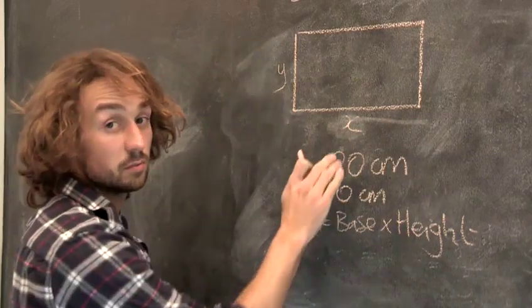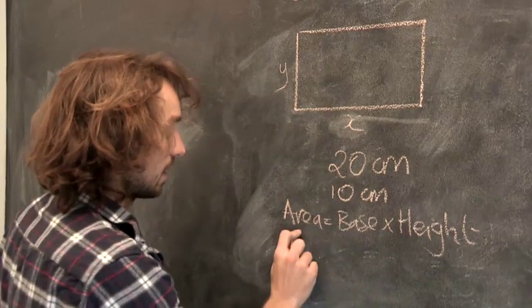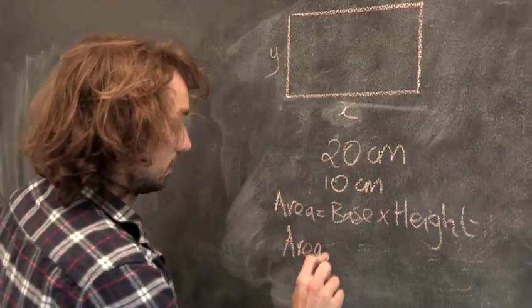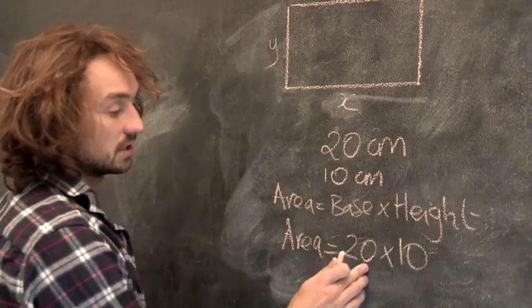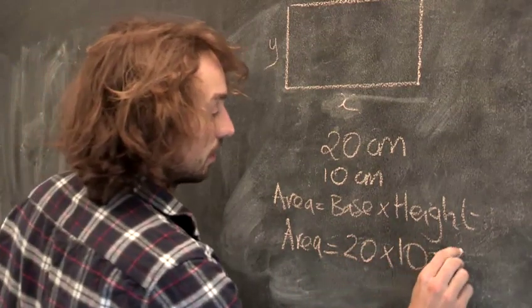All you do is take your two numbers and multiply them together. So the area is 20 by 10. 20 times 10, that's 200.